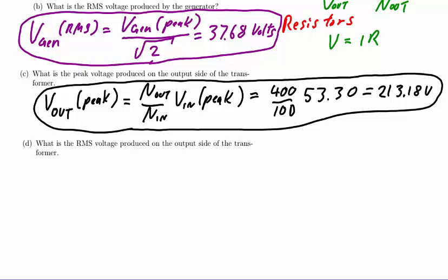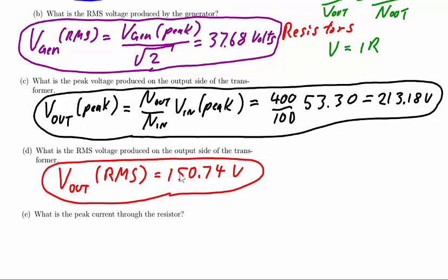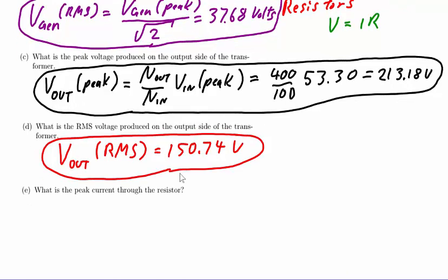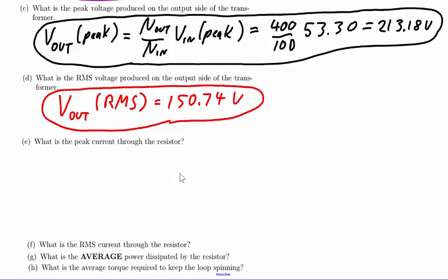One is to take the previous answer and divide by square root of 2, and the other is to take the previous formula and use as our input the RMS generator voltage rather than the peak voltage. No matter which way we go, we're going to get the same result for the RMS output voltage of our transformer, and that result is 150.74 volts.